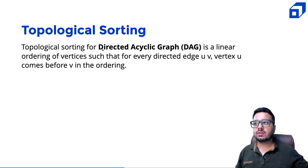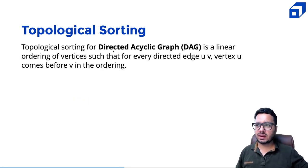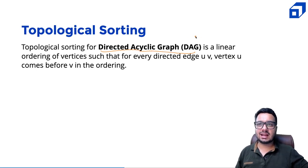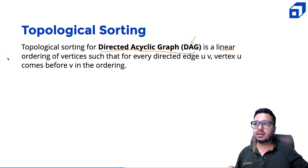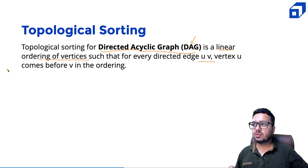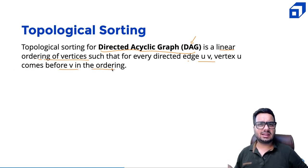Let us start with the definition of topological sorting. It is defined for a directed acyclic graph, also known as a DAG. It is a linear ordering of vertices such that for every directed edge UV, vertex U comes before V in the ordering.